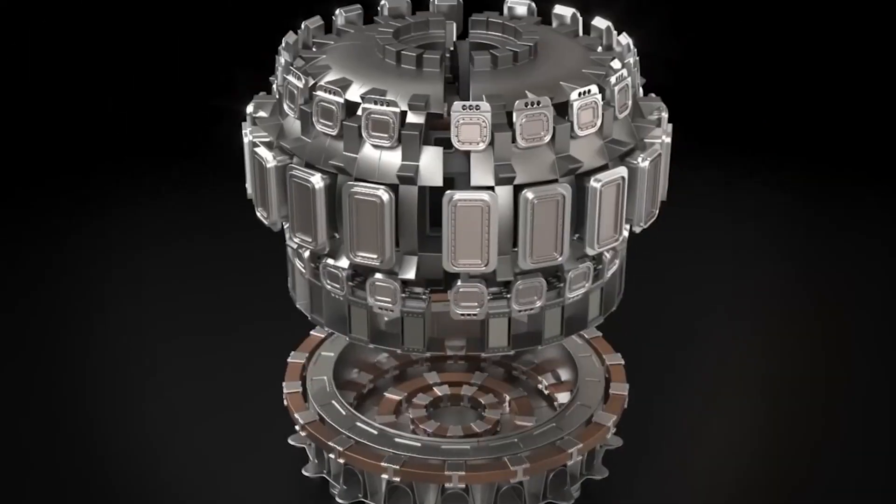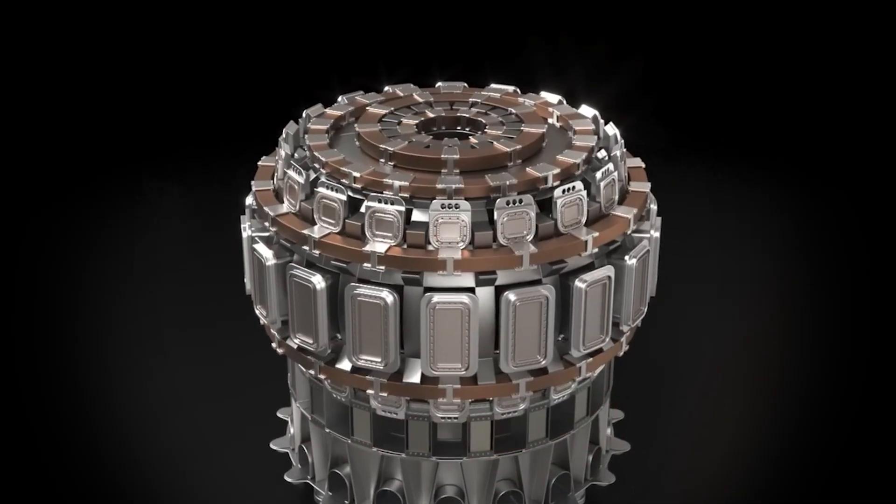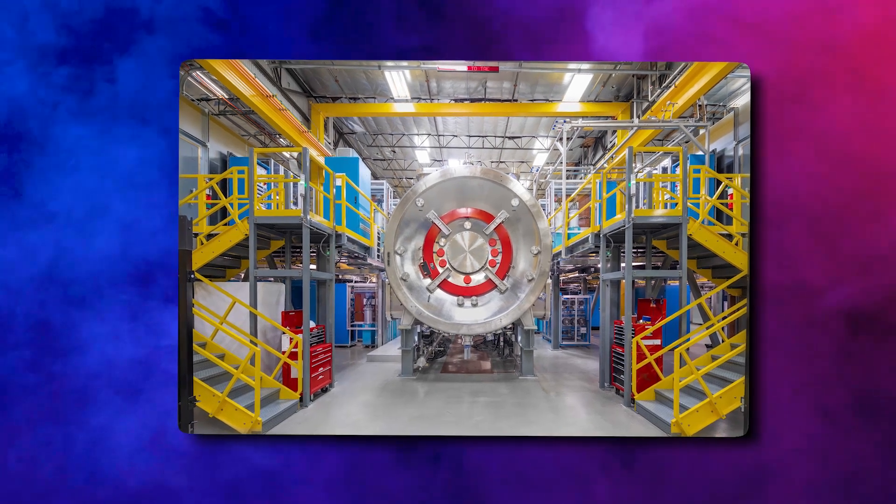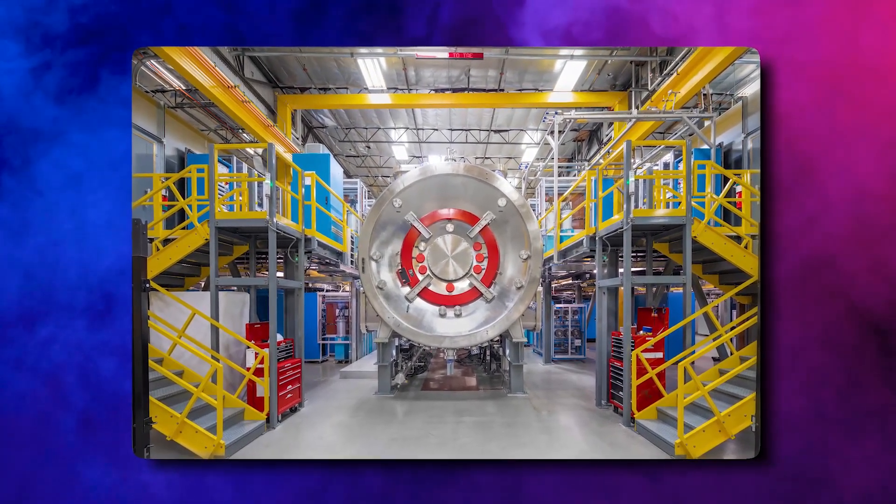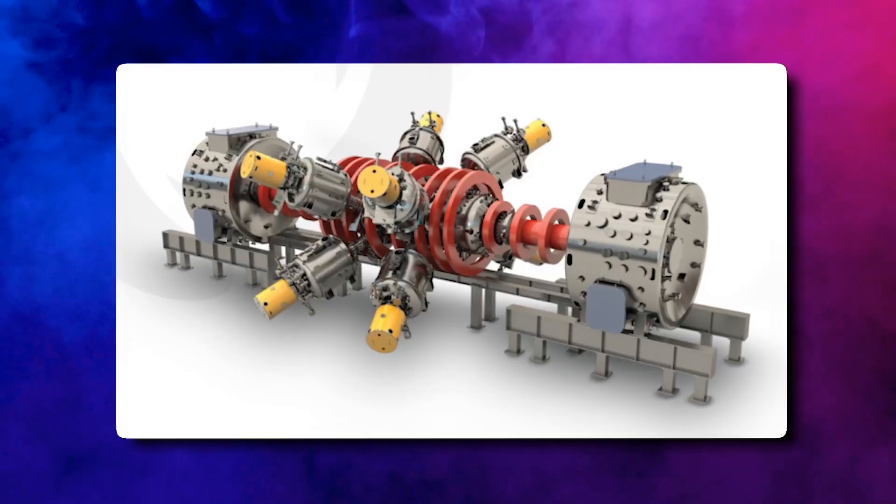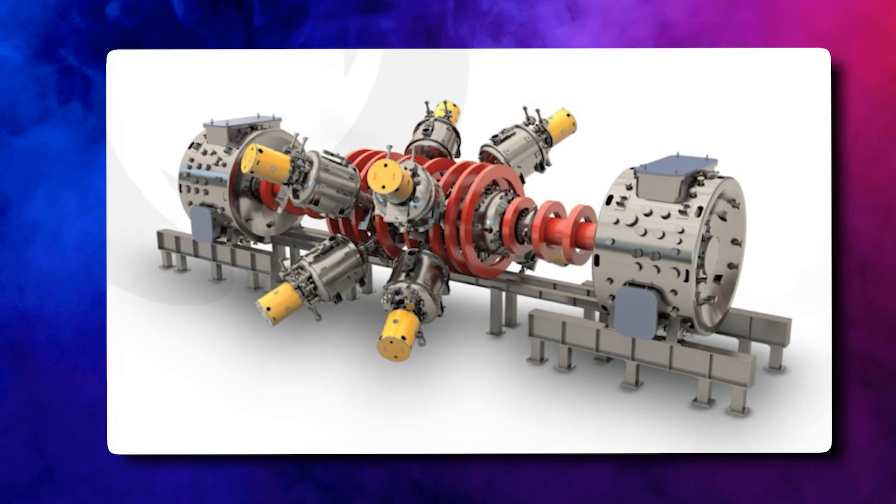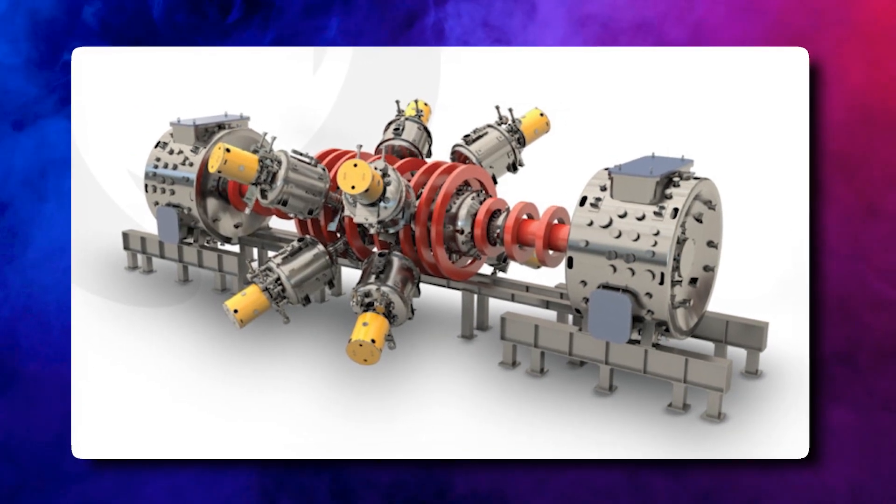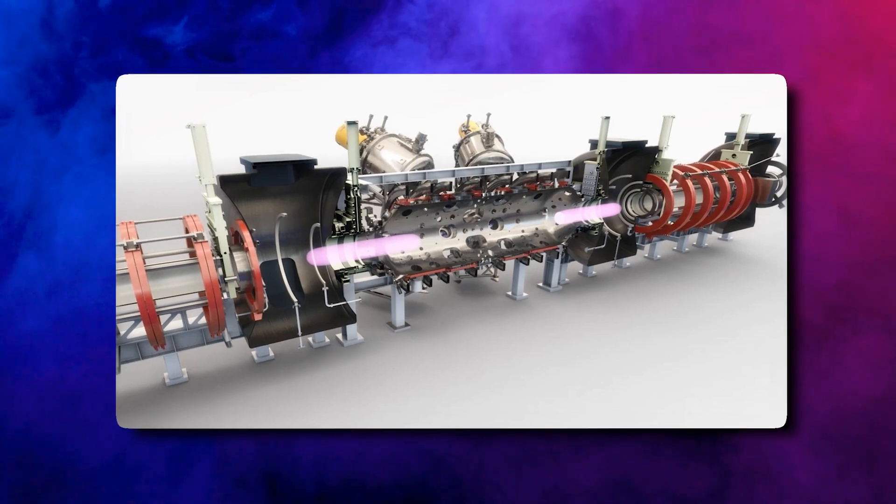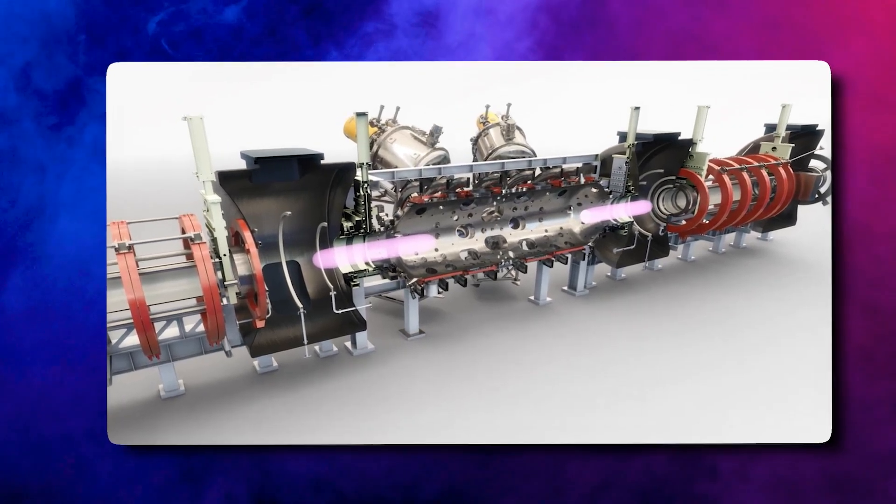TAE Technologies, which began in 1998 as TriAlpha Energy and is based in California, is one of the fusion startups with the most experience. The TAE reactor is made to use something called a field-reversed configuration to make a ring of plasma that spins around and is held in place by its own magnetic field. The TAE reactor uses beams of high-energy neutral hydrogen particles to force a reaction that makes alpha particles.